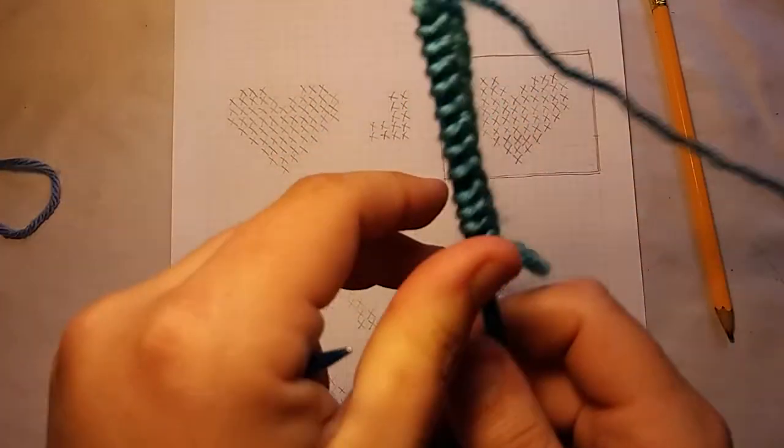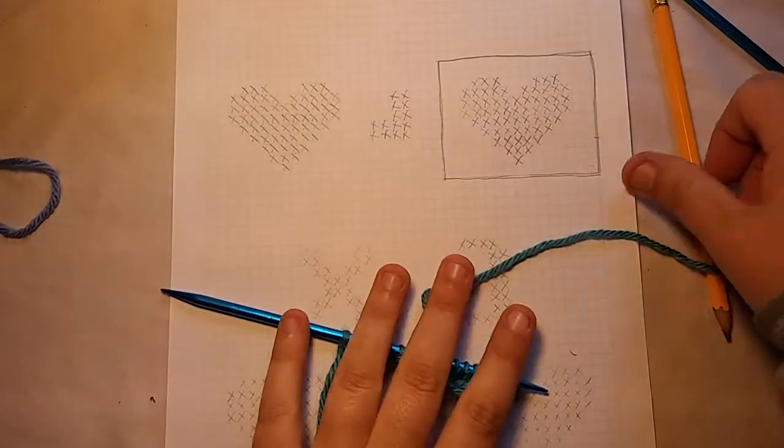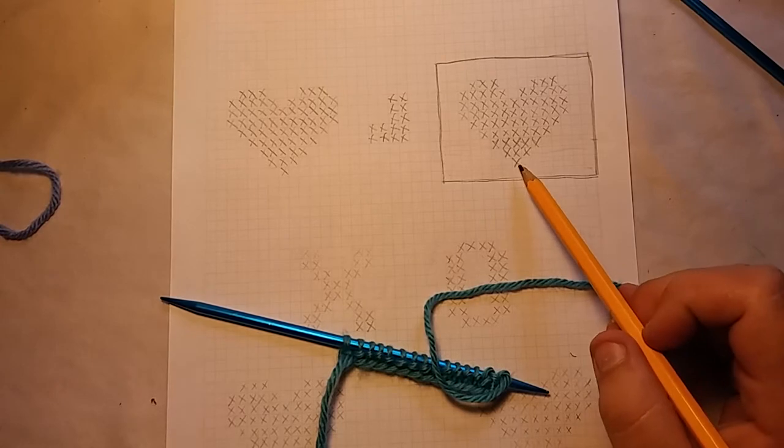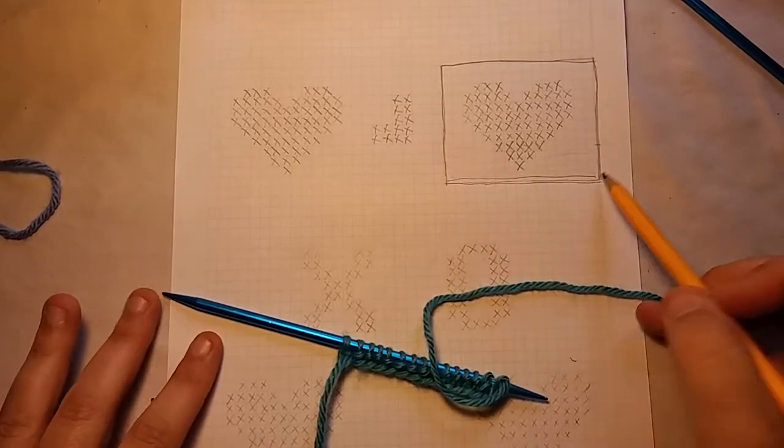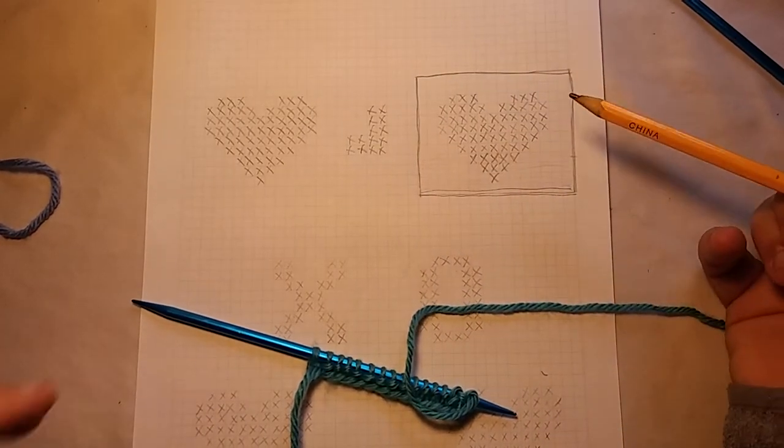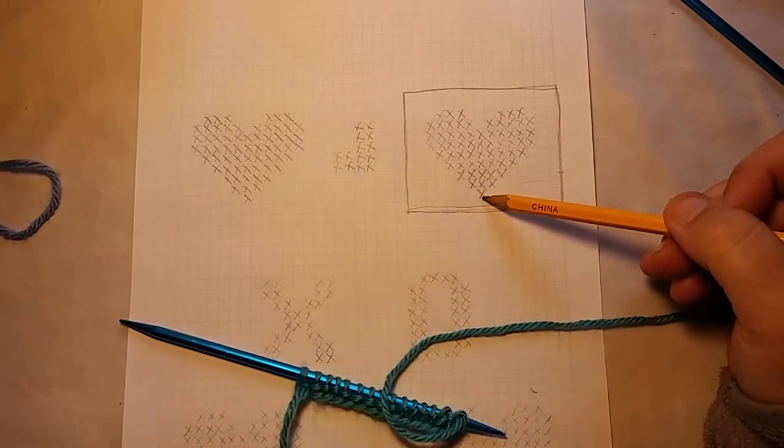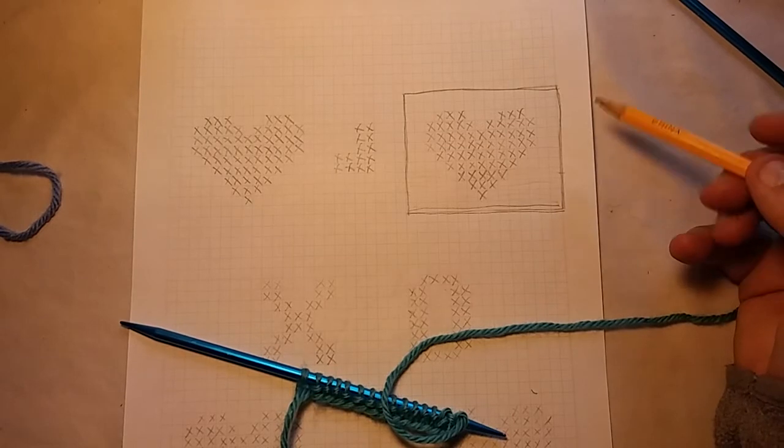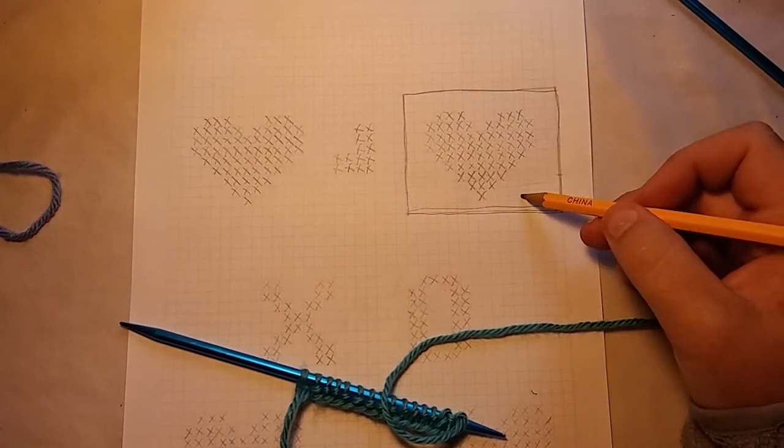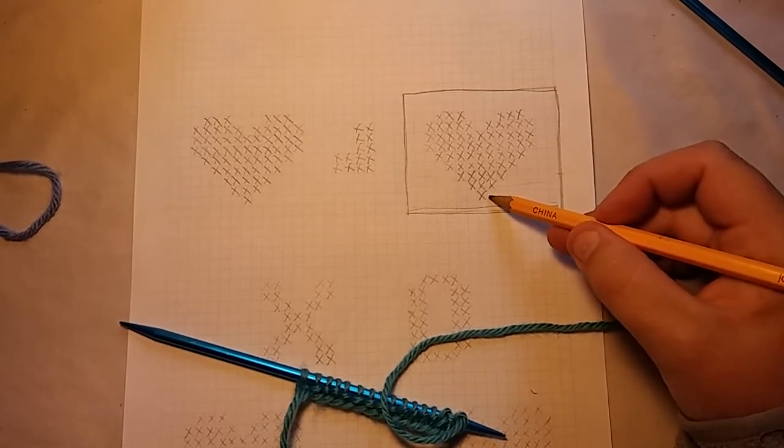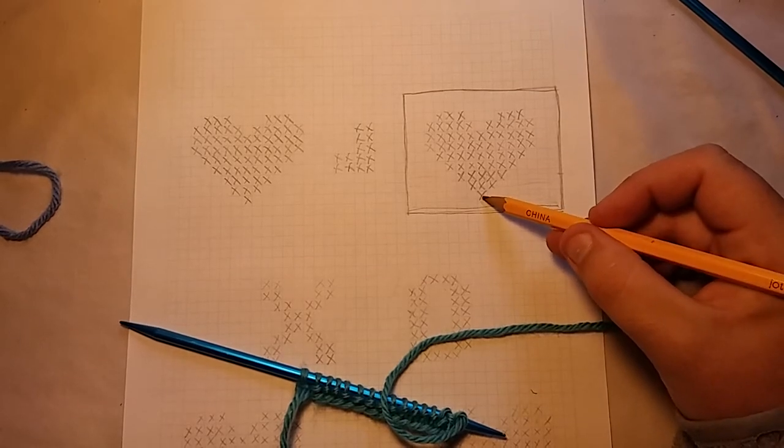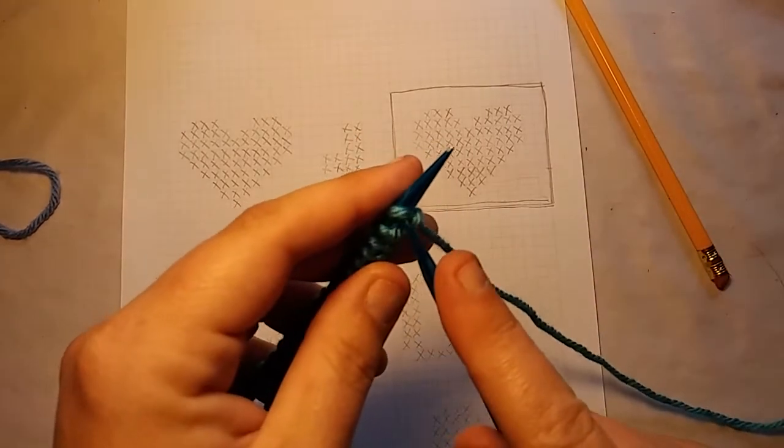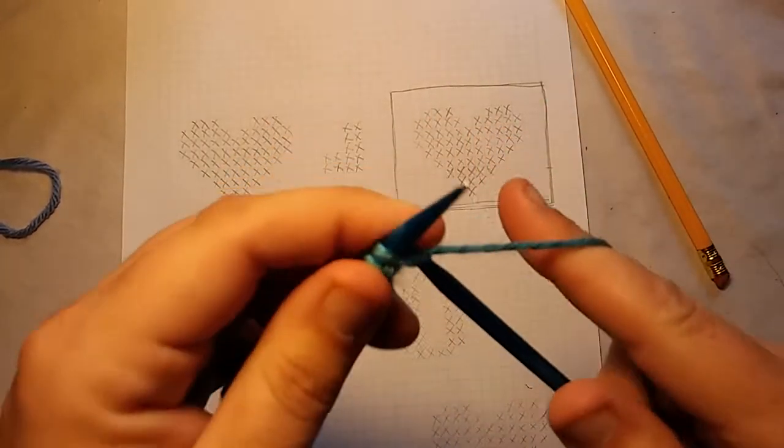So, I knit the first row across. Now, I'm going to start my graph or my design or my pattern that I've created. In this case, I have an X here. And the X's represent your purl stitches. So, and everything else is just knit stitches. So, I have one, two, three, four, five, six. I'm going to knit seven, purl one, and then knit the rest. So, you guys have to watch me knit for a minute. I'm sorry.